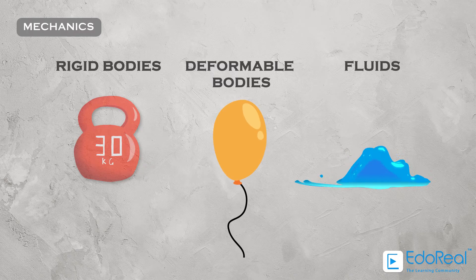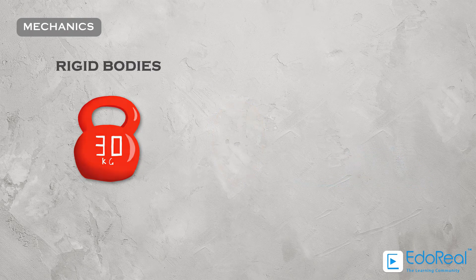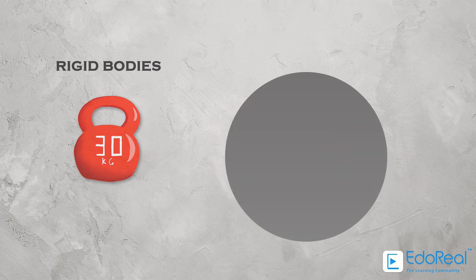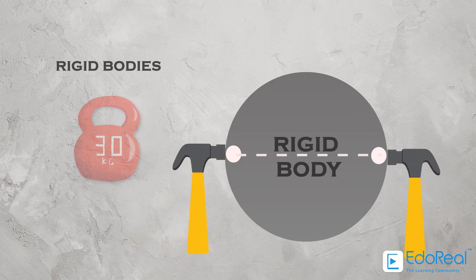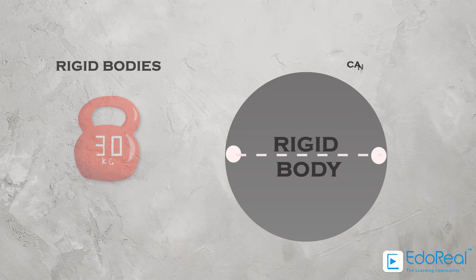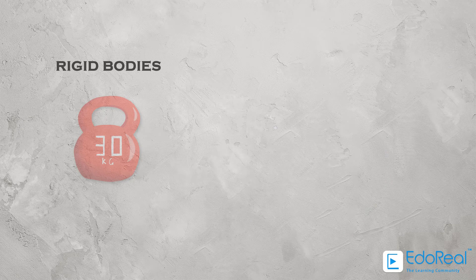In this subject we are mostly concerned with the mechanics of rigid bodies. A body is formally regarded as rigid if the distance between any set of two points in it is always constant in time, regardless of external forces exerted on it. This basically means that you can't deform it by any means — it's somewhat an indestructible thing.